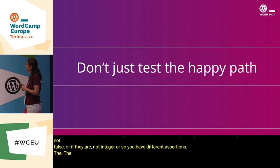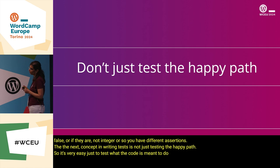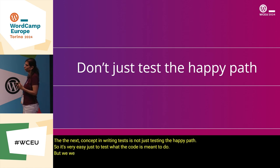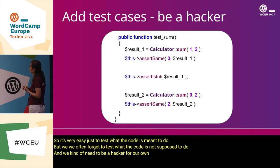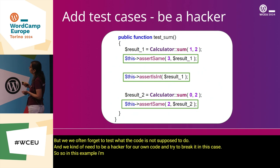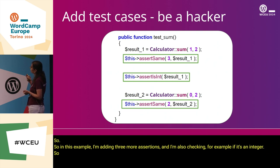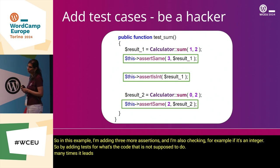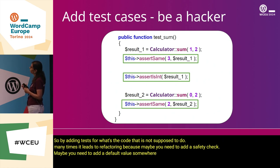The next concept in writing tests is not just testing the happy path. It's very easy to test what the code is meant to do, but we often forget to test what the code is not supposed to do. We need to be a hacker for our own code and try to break it. By adding tests for what the code is not supposed to do, it often leads to refactoring — maybe you need to add a safety check or a default value somewhere.